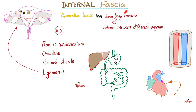Next, we have the internal fascia, which means we went even deeper. It's made of connective tissue. Your internal fascia will line your body cavities. It also extends between different organs — such as between the stomach and the liver, between different loops of the intestine, between an organ and the abdominal wall, etc. Examples include the fibrous pericardium surrounding your heart, the omentum in your belly, the femoral sheath in your thigh — which contains the femoral artery and vein and others — and pelvic ligaments such as the ovarian ligament, which connects the ovary to the uterus, the round ligament of the uterus, the broad ligament, and a gazillion other ligaments.